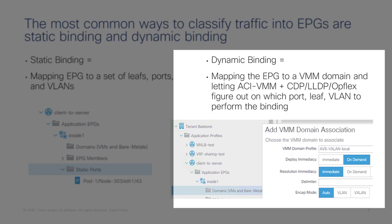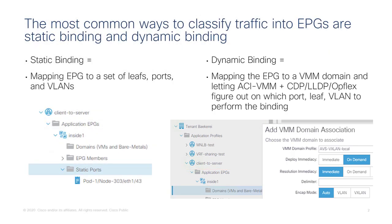This is called dynamic binding — the dynamic part is that you don't manually configure VLANs; these are all handled by ACI. ACI maintains the mapping between VLANs and leaf ports. As a network admin, you just associate the VMM domain to the EPG and the configuration ends there. That's the normal way to classify workloads outside of the micro-segmentation feature set.